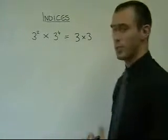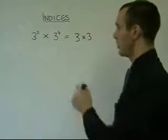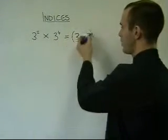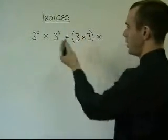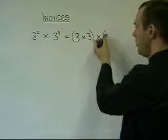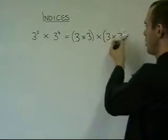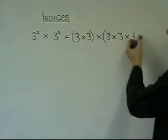If we have 3 to the power of 4, that's going to be the same sort of thing, but 4 times. So if we write that in brackets, we can times that by 3 to the power of 4, which is 3 times 3 times 3 times 3.